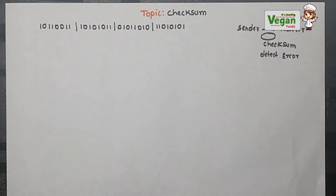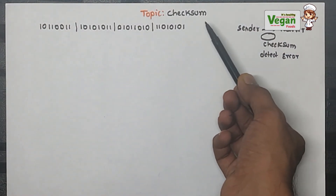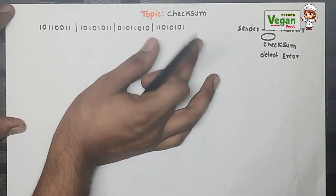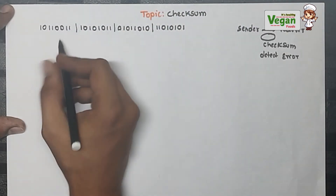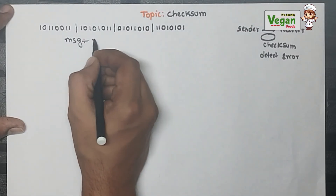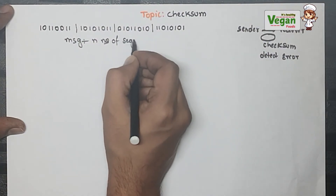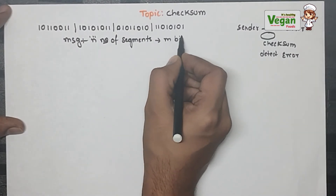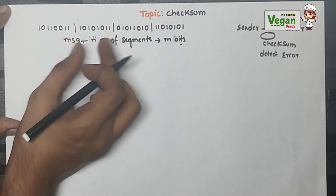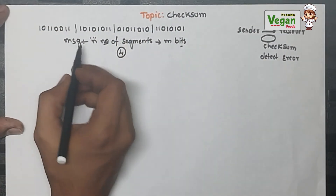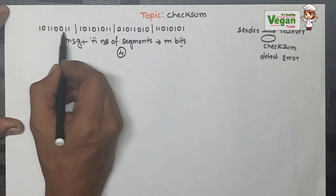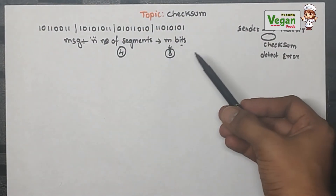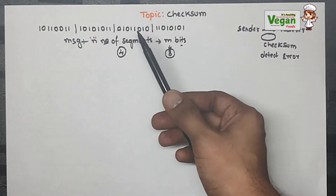Let's see. The problem says: check the sum. There will be frames — frame 1, frame 2, frame 3, frame 4. This full set will be called the message. The message will be divided into n number of segments, and in each segment there will be n number of bits. All 4 segments are there, and in all 4 segments there are 2+2+2+2 = 8 bits total. In each segment there will be an equal number of bits — 8 bits each.